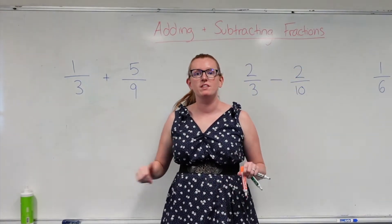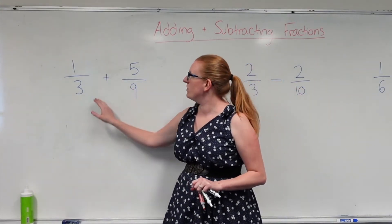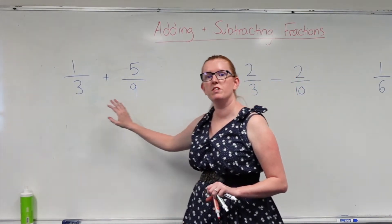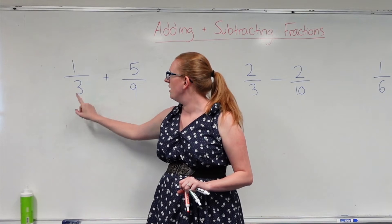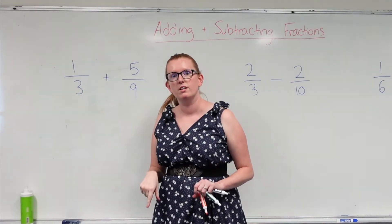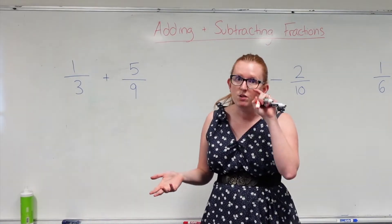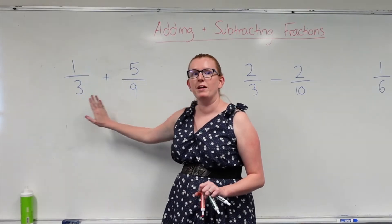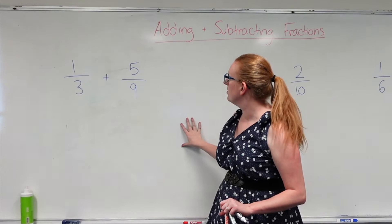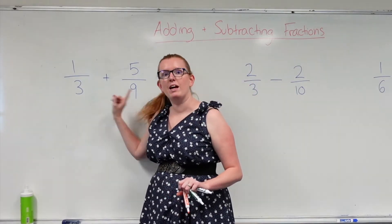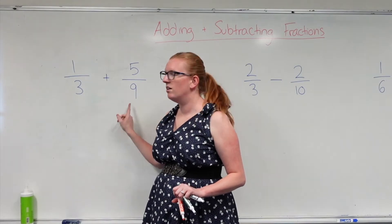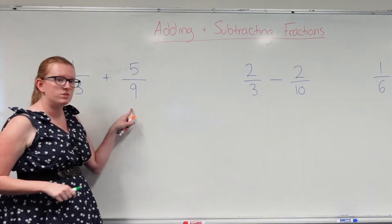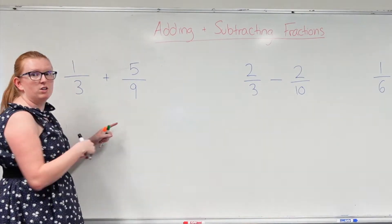Let's do a couple of examples where we have different denominators. So here I've got 1 over 3 plus 5 over 9. Now I can't add them at the moment because they've got different denominators. So I need to find a number that both denominators divide into equally. I need a number that 3 and 9 both fit inside. Well, 3 actually goes into 9. So 9 will be the perfect denominator, because 3 goes into 9 and obviously 9 goes into 9.